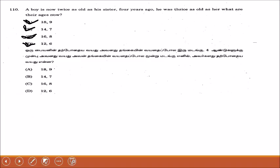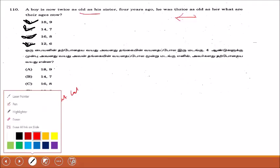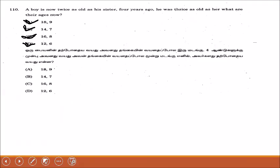Now we will go into this problem. A boy is now twice as old as his sister. Four years ago, he was twice as old as what they are now. We will first say the actual method, then a shortcut. As a math teacher, it's my duty to tell you what is the actual procedure, but we will say the actual procedure first.